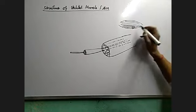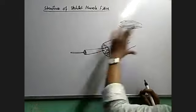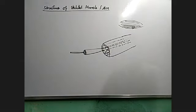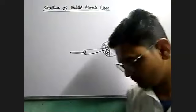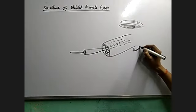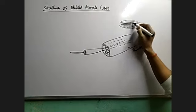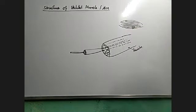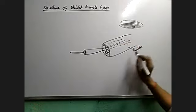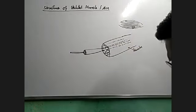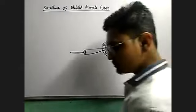We will be able to see that this muscle fiber contains big bundles of muscle fibers. These bigger bundles of muscle fibers are known as fascicles. Here is one bundle, here is another bundle, here is another bundle. This is known as fascicles — it's a muscle bundle.